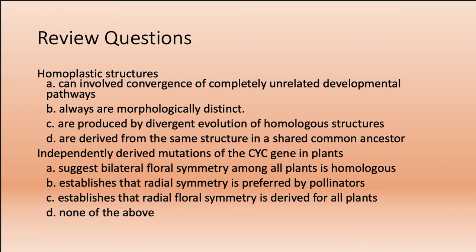Homoplastic structures can involve convergence of completely unrelated developmental pathways. Independently derived mutations of the CYC gene in plants show that bilateral symmetry can arise via different mechanisms. The answer to the review question is D — none of the above — because all the other options were false.